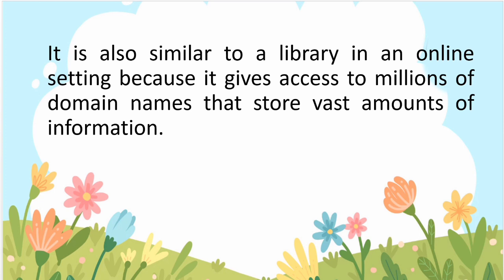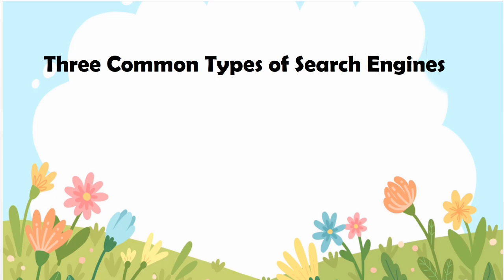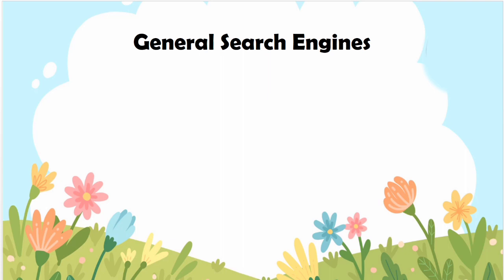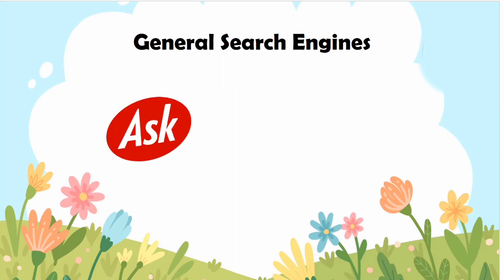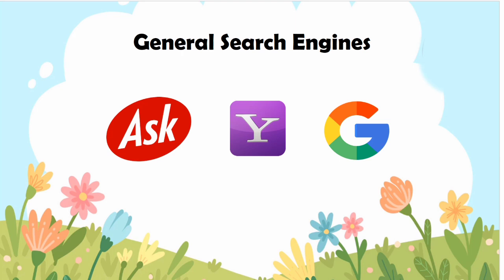There are three common types of search engines. The first are general search engines — wide-ranging search engines capable of searching millions upon millions of sites for specific information. Some common examples are Ask.com, Yahoo, and Google. Ask.com is a widely used search engine accepting plain English questions or phrases or terms. Yahoo is one of the internet's leading search engines and also the largest web portal providing links to thousands of other websites. Google is a popular internet search engine that scans the web to find web pages relevant to the words you have typed in the search box.